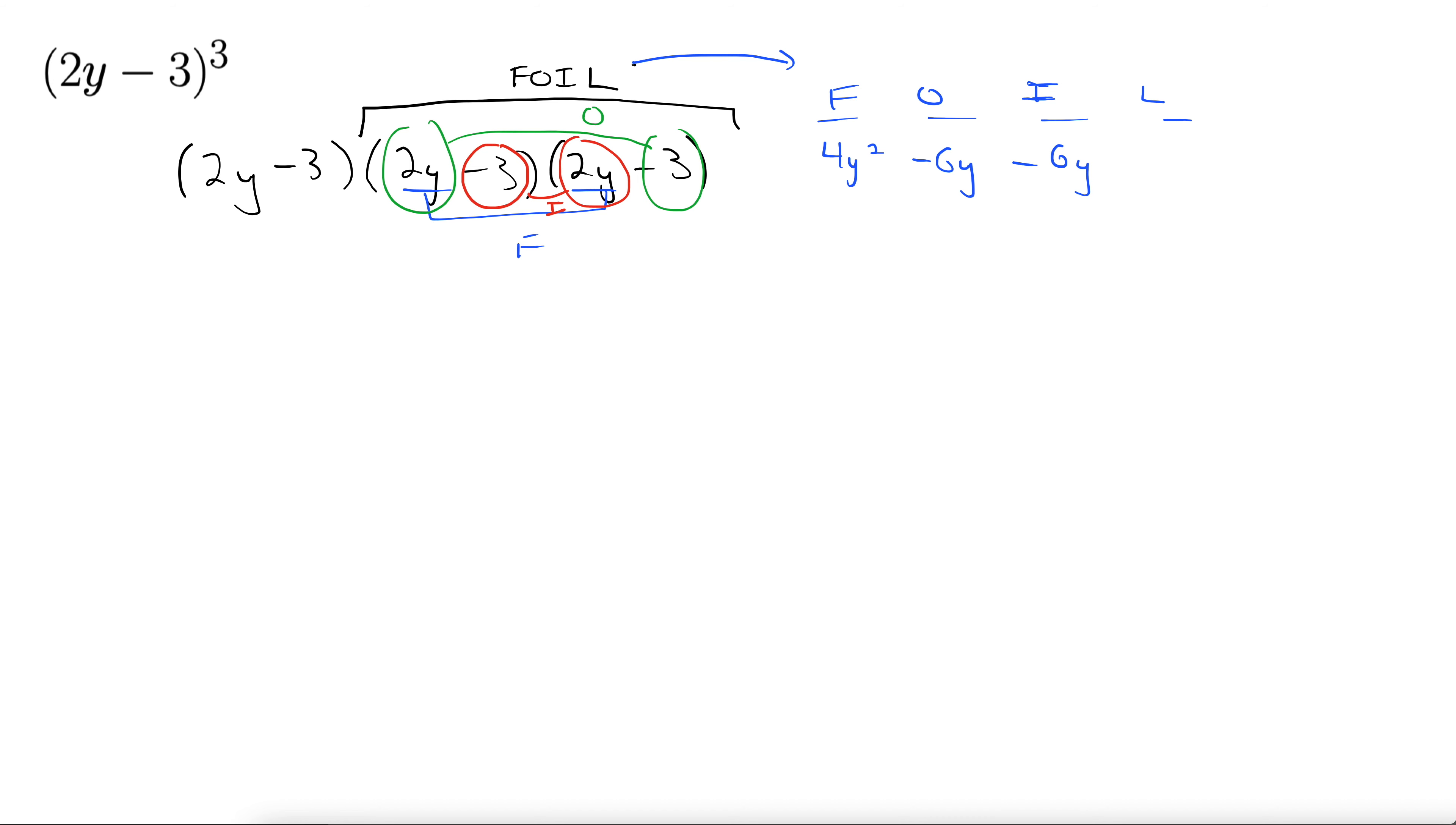And finally, the last terms in our binomial make our last. So that gives us minus 3 times minus 3 is a plus 9. Make it look nice. Combine like terms. 4y squared minus 12y plus 9.